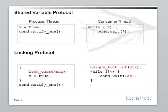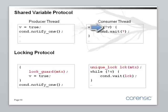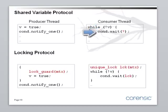Here's the shared variable protocol in code. The producer thread sets v to true and calls notify_one. The consumer thread in a loop first tests v, and if it's not true, calls wait on the condition. When it wakes up, it retests v, and again possibly calls condition wait. The problem with this is, of course, we have shared state — one thread is writing to it while the other is reading from it. It's a classic data race.